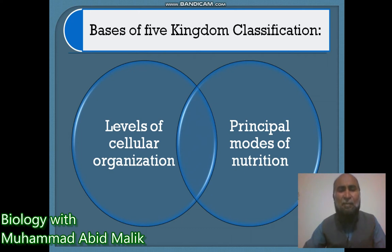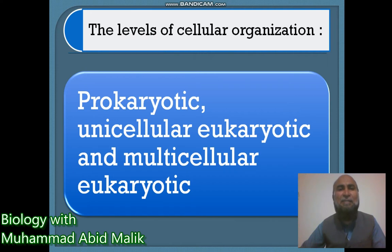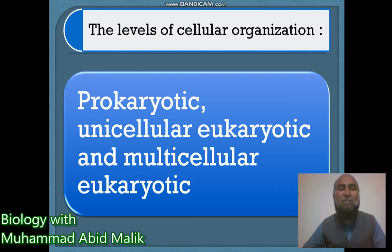Now we are trying to more analyze the levels of organization. As you are well aware, we have already learned this in the first chapter. Prokaryotic cells, unicellular eukaryotic, and multicellular eukaryotic were basically the levels of cellular organization. We have already covered this in chapter number one regarding cellular organization.